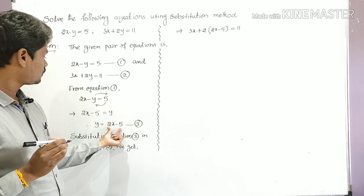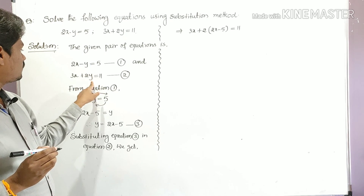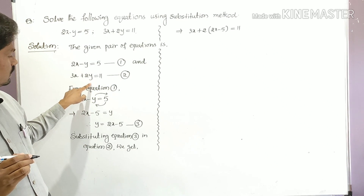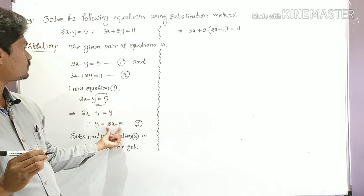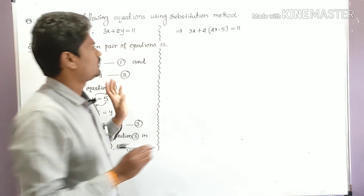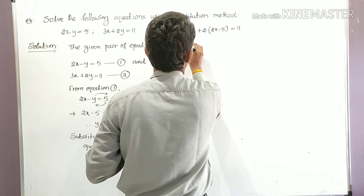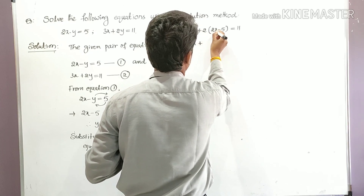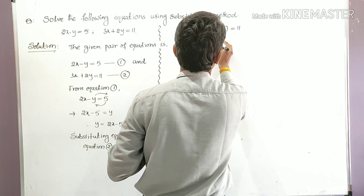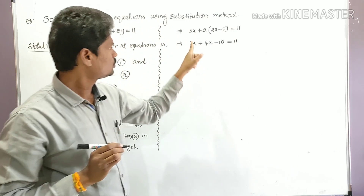So substituting y equal to 2x minus five wherever y appears in equation two: write 3x plus 2 into (2x minus five) is equal to eleven. Simplifying: 3x, and 2 multiplied by 2x is 4x, and 2 multiplied by minus five is minus ten, is equal to eleven.